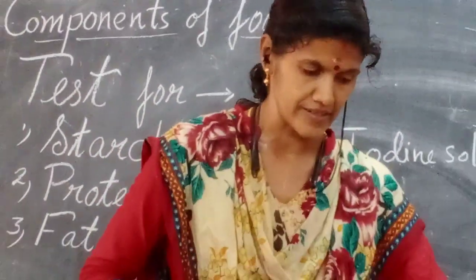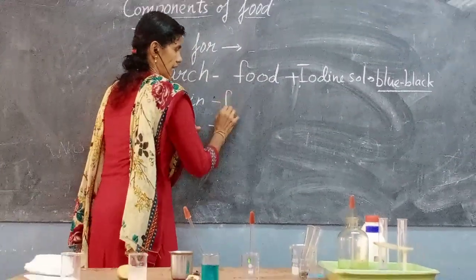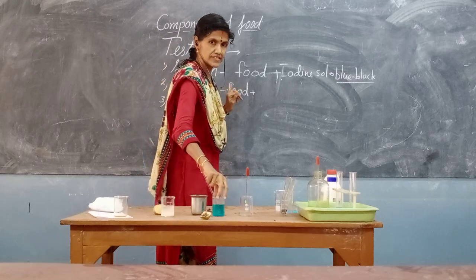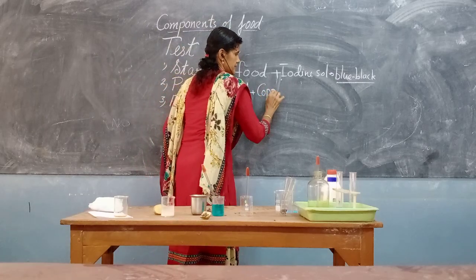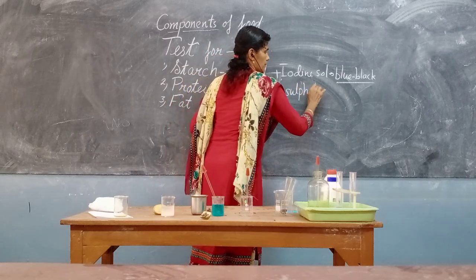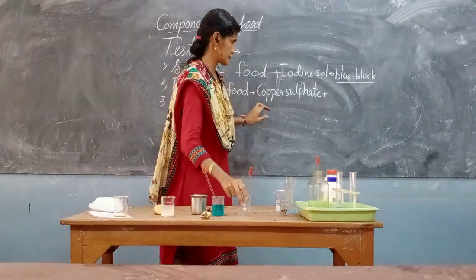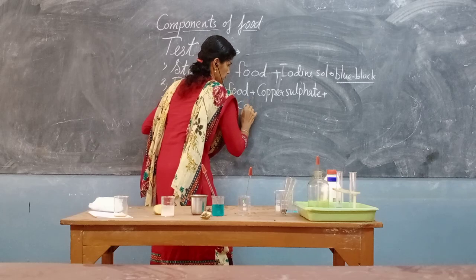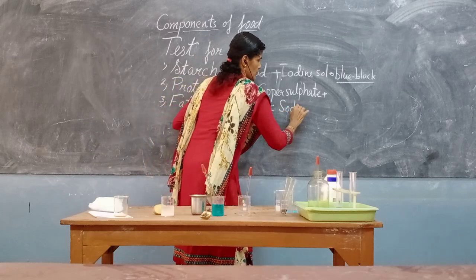So what is the test conducted here? Protein — that is the food item — plus this is the copper sulfate, so here I am writing: food plus copper sulfate. Next, this was the caustic soda, so I am writing plus caustic soda.